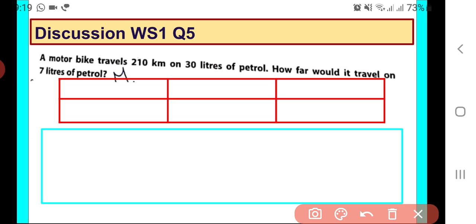We will be making a table. In the first row we will write down distance traveled in kilometers, and in the second row we will write petrol used in liters.